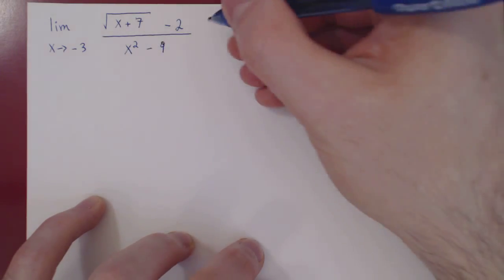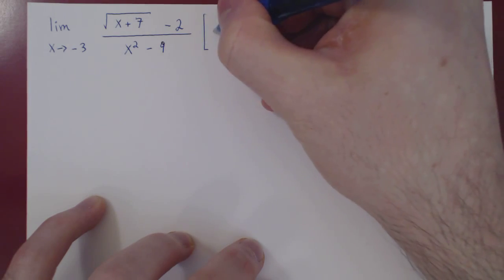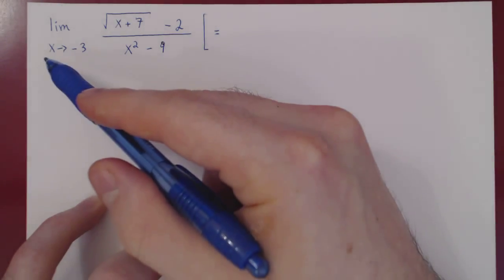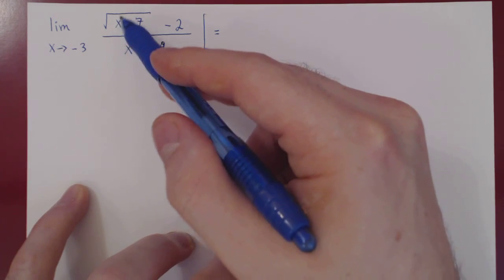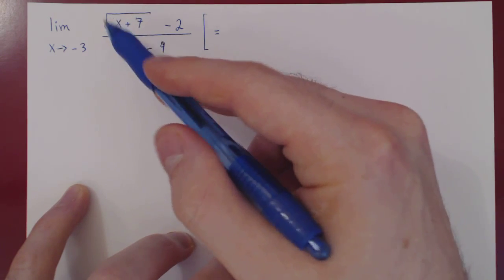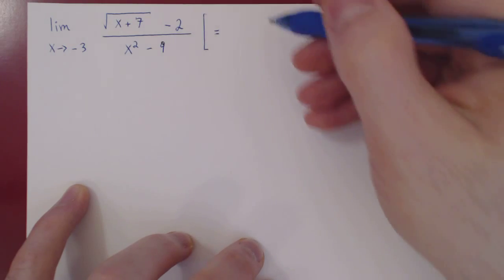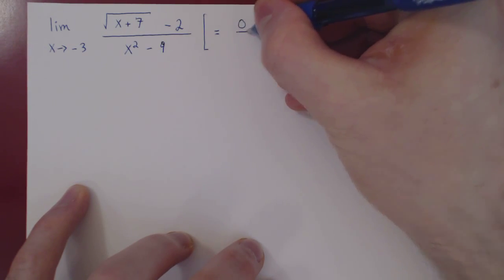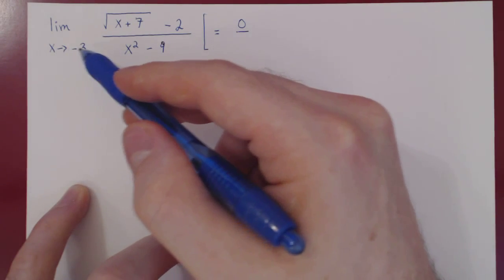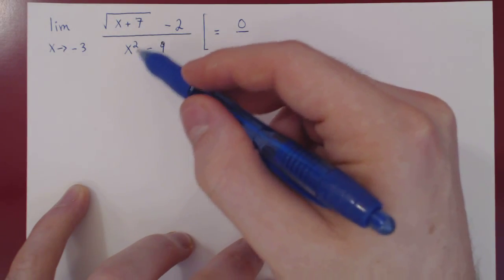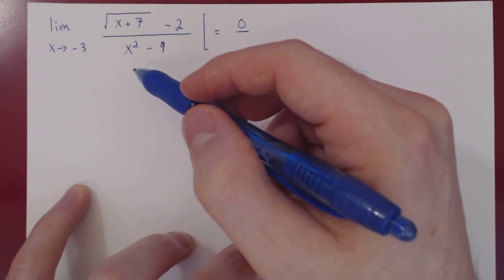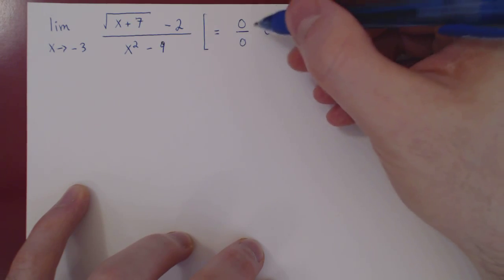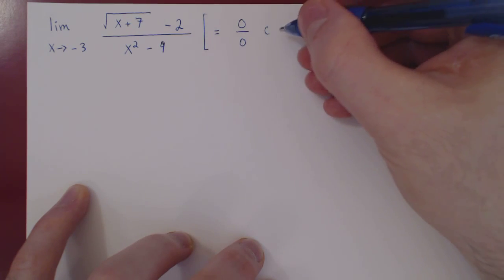We have a limit, so as always we consider what kind of case we're dealing with. As x approaches negative 3, x plus 7 approaches 4, the root of 4 is 2, minus 2 is 0. So our numerator shrinks to 0. As x approaches negative 3, x squared approaches positive 9, minus 9 also approaches 0. So we have an indeterminate 0 over 0 case.